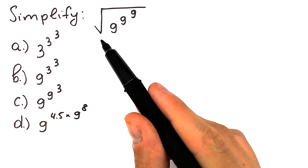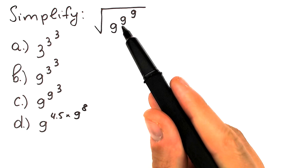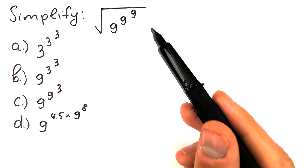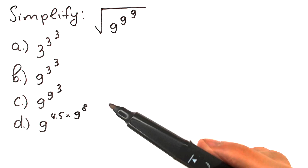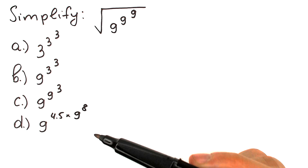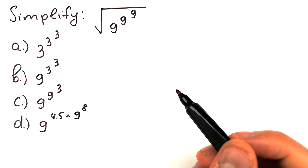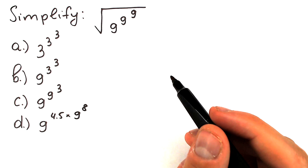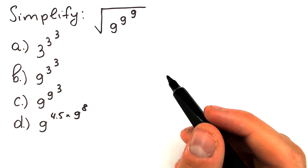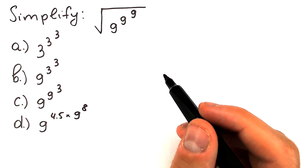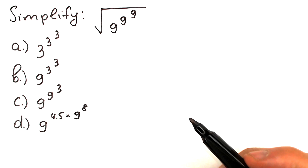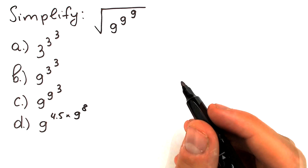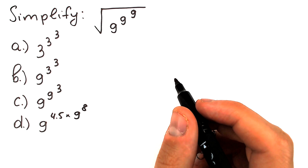We should simplify this expression: we have 9 to the power 9 to the power 9. What is the correct answer — option A, B, C, or D? Write your suggestion down in the comment section. It will be really interesting to read about your approach and what you think is the correct answer.